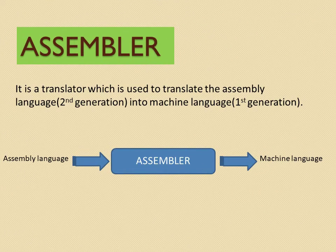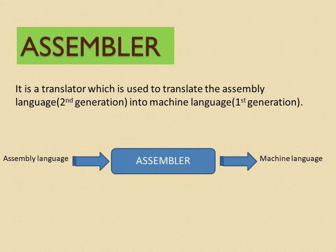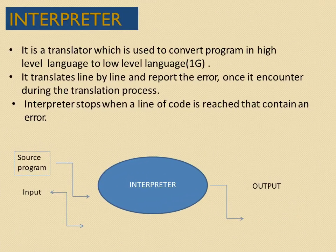Now we will see what an assembler is. It is used to translate assembly language — that is, computer instructions — into machine language. Assembly language is nothing but mnemonics code; it is a symbolic code that was generated in the second generation and has to be converted into machine language.